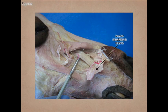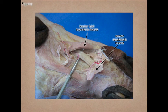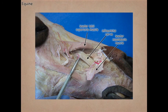Here we see the levator nasal labialis reflected. We will also elevate the levator labii superioris muscle — remember this muscle gives us the flehmen response in the horse by elevating the upper lip. We can see very nicely the infraorbital nerve coming through the infraorbital foramen. While within the infraorbital canal, it gives branches to the cheek teeth.